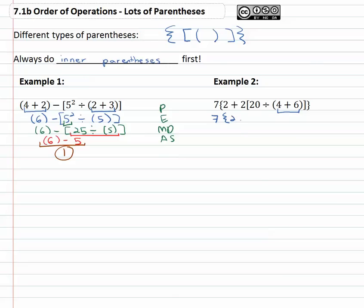We've got 7{2 + 2[20 ÷ (4 + 6)]}. So 4 + 6 is 10. Continuing to work out of those parentheses, now we've got the square parentheses to deal with. So we've got 7{2 + 2[20 ÷ 10]}, which is 7{2 + 2[2]}.